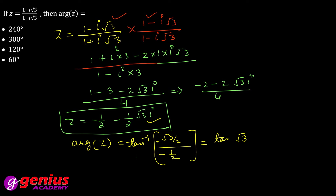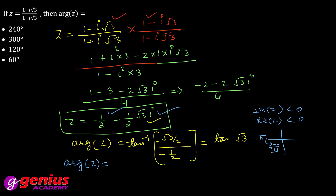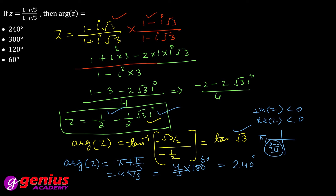Now we check which quadrant: both imaginary and real parts are negative, so the point lies in the third quadrant. In the third quadrant, argument = π + tan⁻¹(√3). Since tan⁻¹(√3) = π/3, the argument = π + π/3 = 4π/3. Putting π = 180°, we get 4 × 60 = 240°. So argument of Z = 240°.